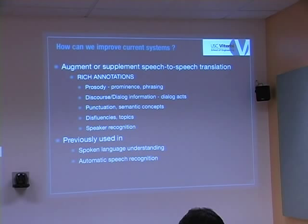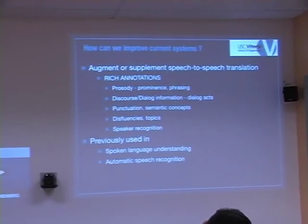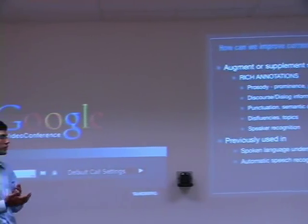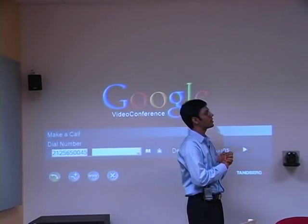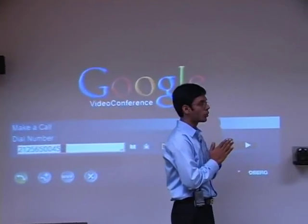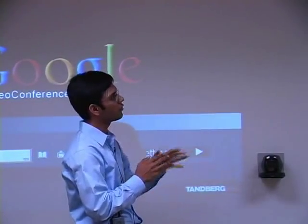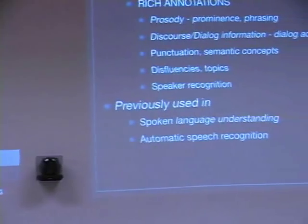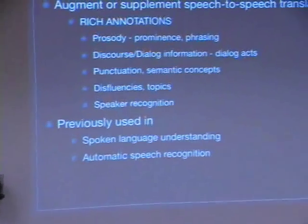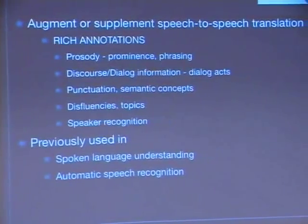How can we improve current systems? There's been a plethora of work in the MT community using linguistic information in translation, specifically syntax and morphology. In contrast, what we are interested in is augmenting speech-to-speech translation systems with rich annotations: prosodic prominence, phrasing, discourse information, disfluencies, topics, and so on. These have been previously used in spoken language understanding and ASR in several NIST evaluation tasks, but we are interested in applying them for speech translation.